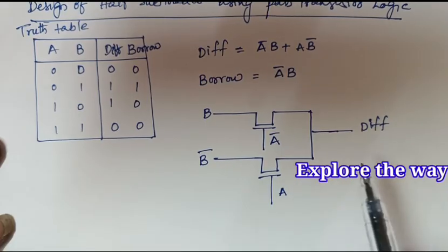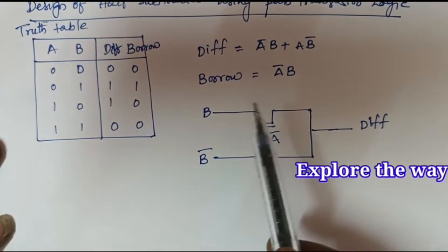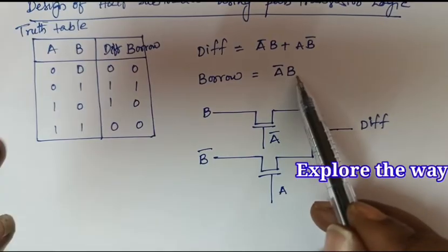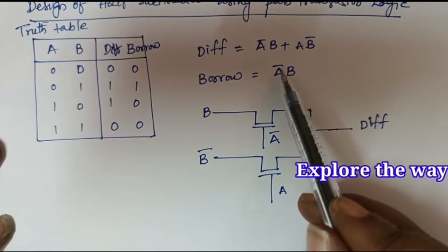When A is equal to 1 the output is 0. The borrow expression consists of only one term that contains only A bar.